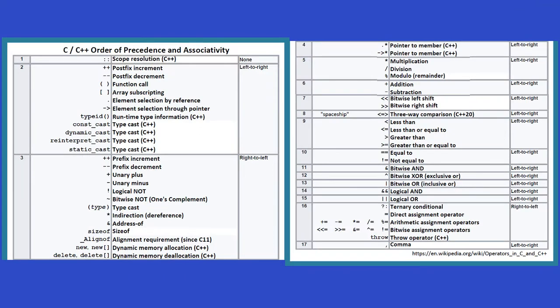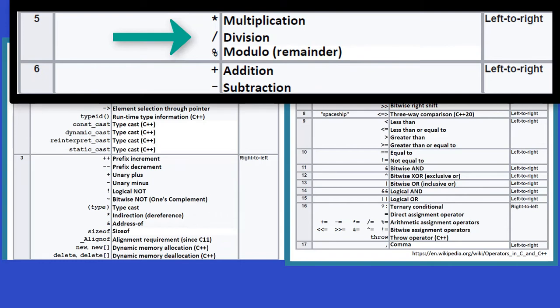At this point in time, all you need to know is that the math operators multiply, divide, and mod occur before plus and minus. When more than one operator is shown at the same level, they are evaluated in the order shown in the last column in the table, usually from left to right.